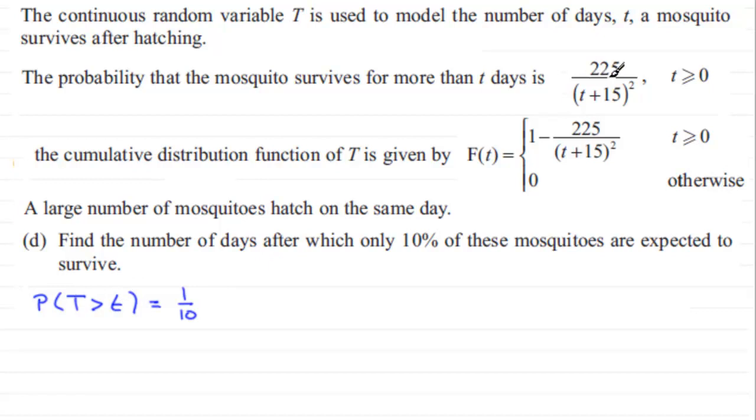So all I've got to do now is I know the probability of being greater than t is given by 225 over (t+15) all squared. Therefore, if we just put that in, we've got 225 divided by (t+15), and that's all squared, and it's got to equal 1/10. So it's just a question of solving this equation.